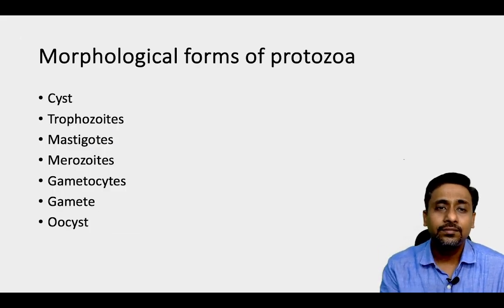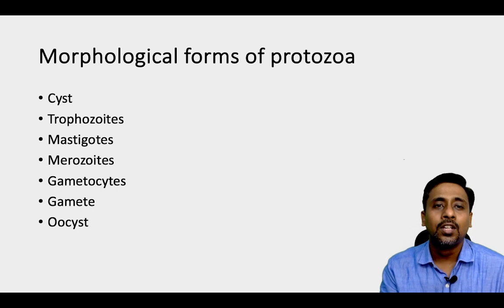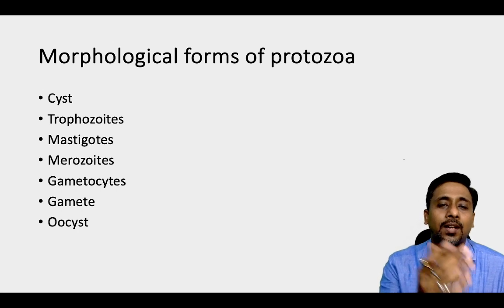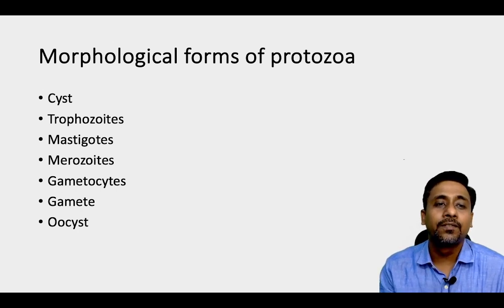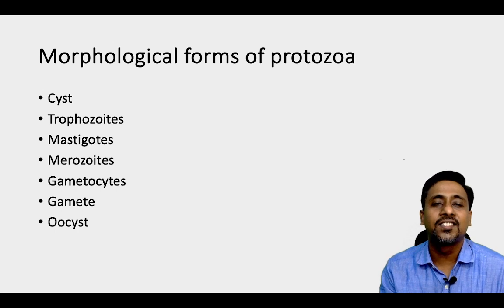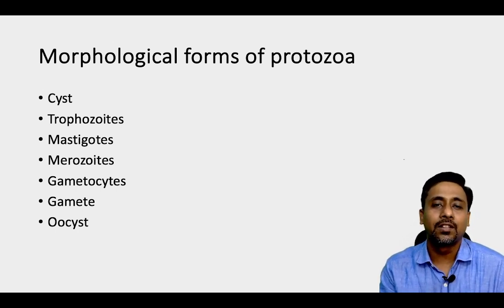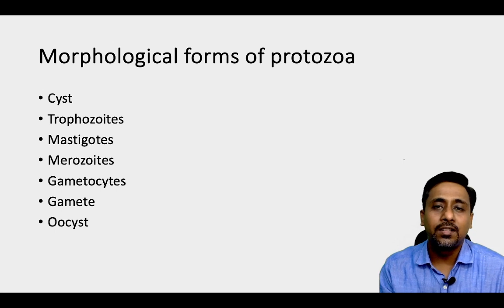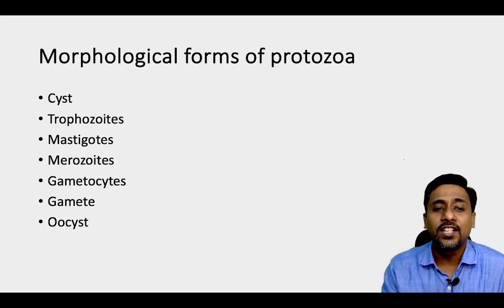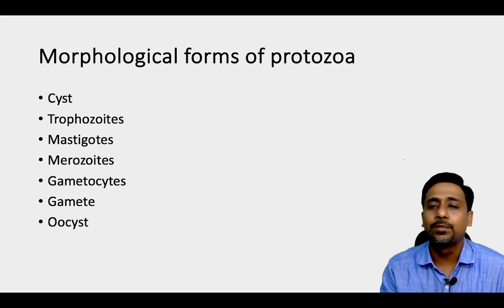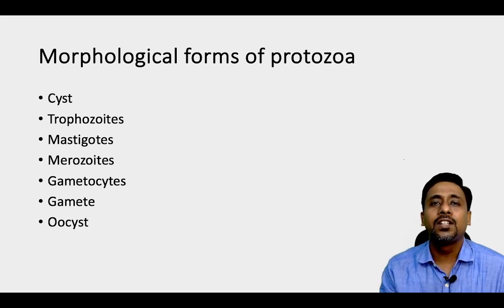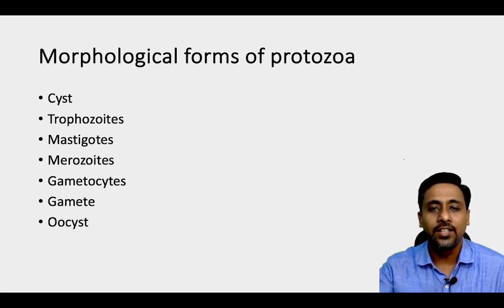In today's video I will discuss the first morphological form of protozoan parasites, that is the Cyst. Apart from Cyst, the other morphological forms are Trophozoite, Mastigote, Merozoite, Gametocytes, and Gamonts. This is a comprehensive list of all the morphological forms of the protozoan parasite. This video I will start with Cyst.